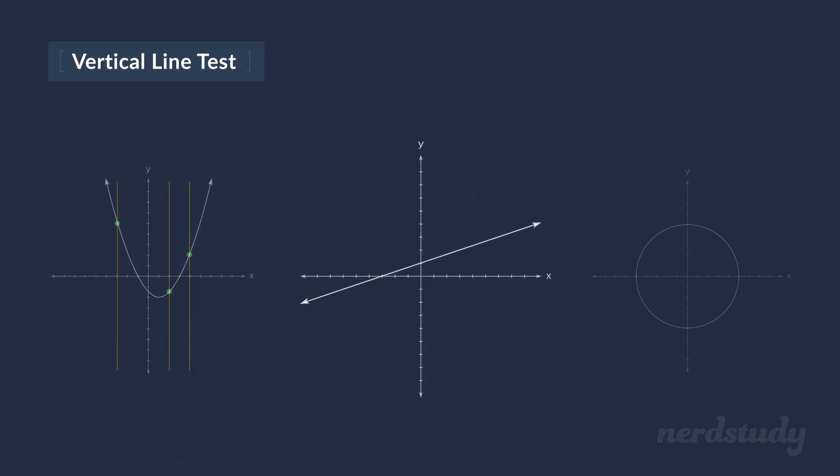And what about this one here? Well, this is a linear graph. So again, using the vertical line test, we see that every line we could possibly draw only intersects one point. So this graph is, in fact, a function.